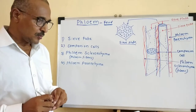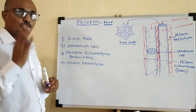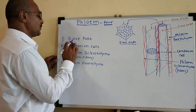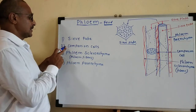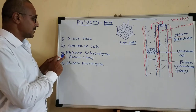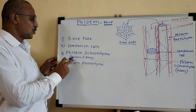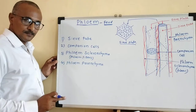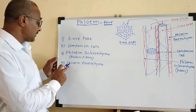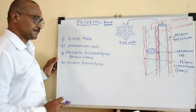Now the phloem is classified into four types: first is sieve tube, second is companion cell, third is phloem sclerenchyma or phloem fibers, and fourth is phloem parenchyma.